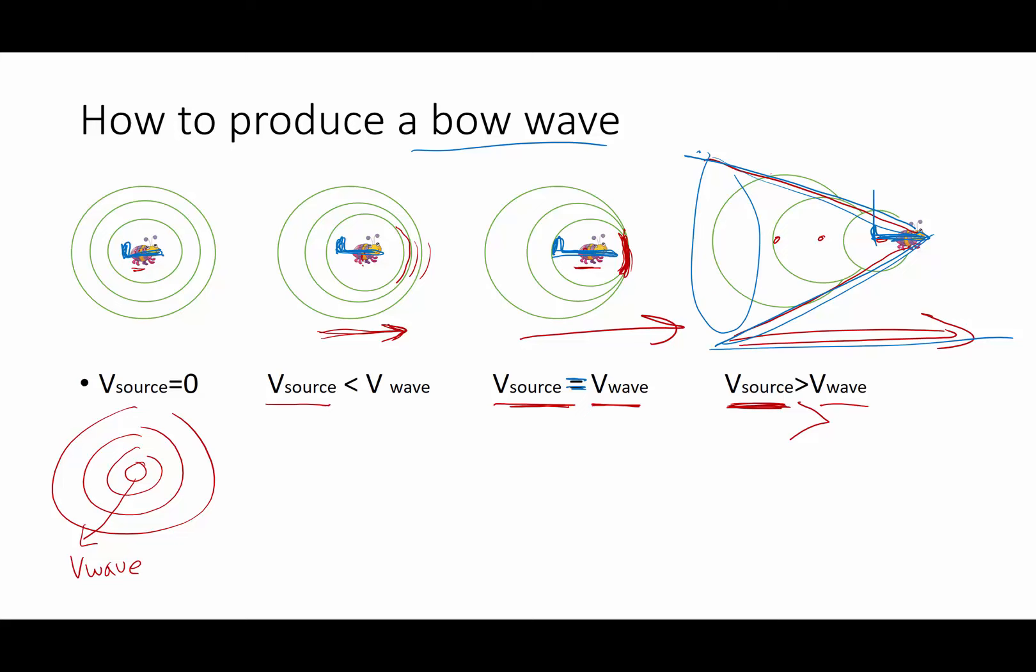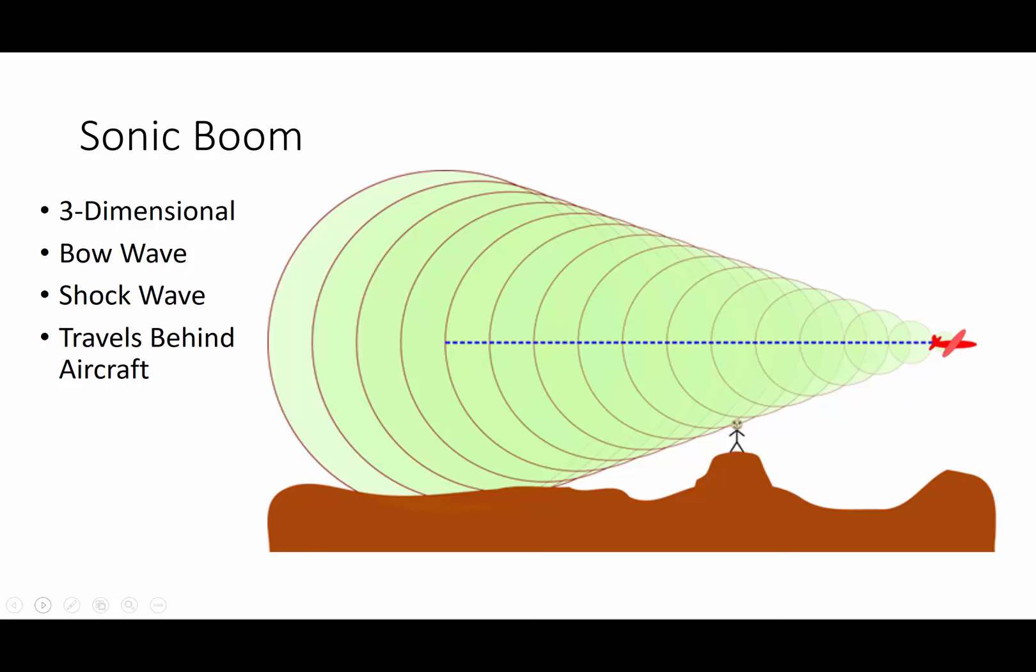And that big, massive, conic wave that it's going to drag behind it through its entire flight, well, ladies and gentlemen, we have just created a sonic boom. And that occurs when the velocity of the source is faster than the velocity of the wave in its medium. So this sonic boom is a three-dimensional wave. It is conical. It is a big cone that this airplane is going to drag behind it.